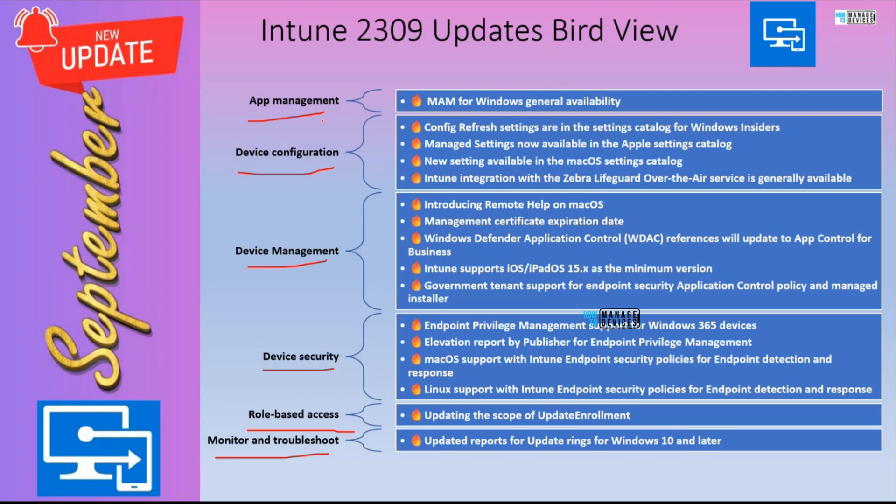In Application Management, the 2309 version of Intune is mainly about MAM general availability — app protection policies and conditional access related to that general availability. We'll come to that shortly.